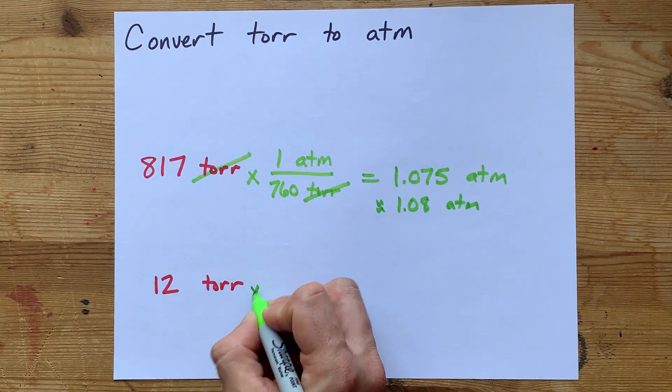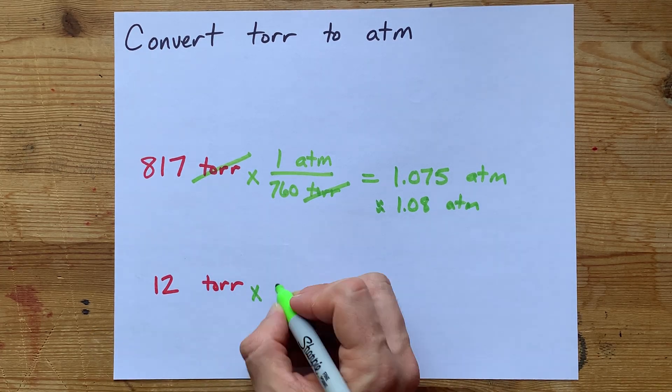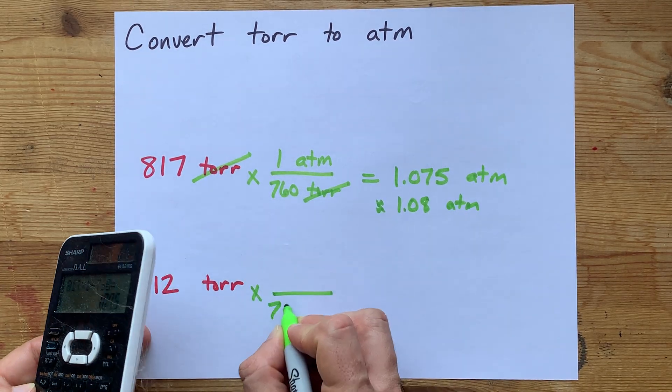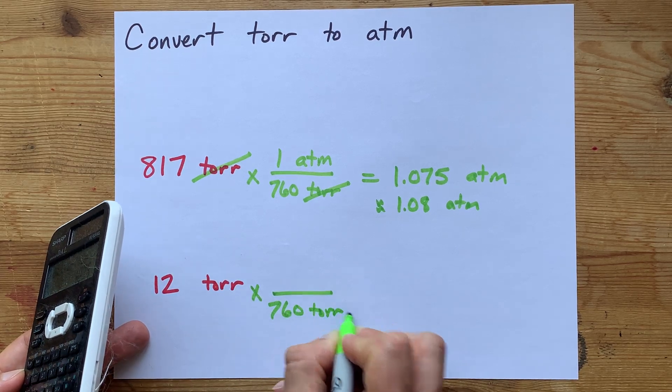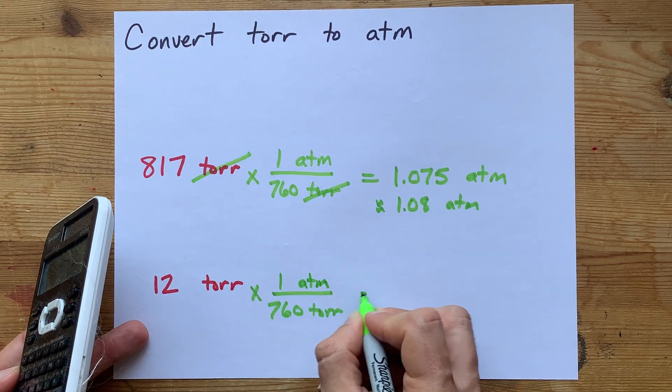But let's just do it one more time. For a small pressure like 12 torr, you can exchange every 760 worth of torr for a single atmosphere.